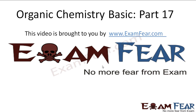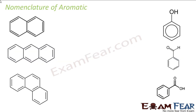Hello friends, this video on organic chemistry basic part 17 is brought to you by examfear.com. Let's go with nomenclature of aromatic compounds. This compound with two benzene rings is called naphthalene, and with three rings it is called anthracene.